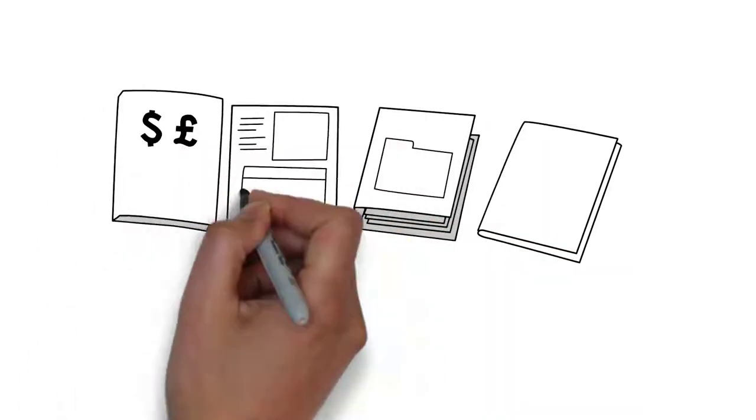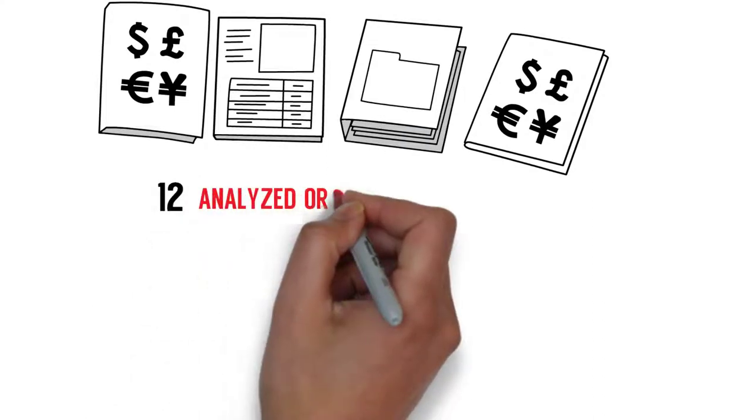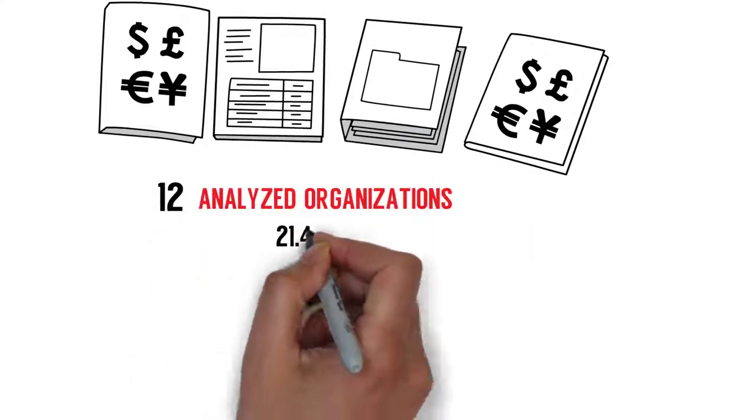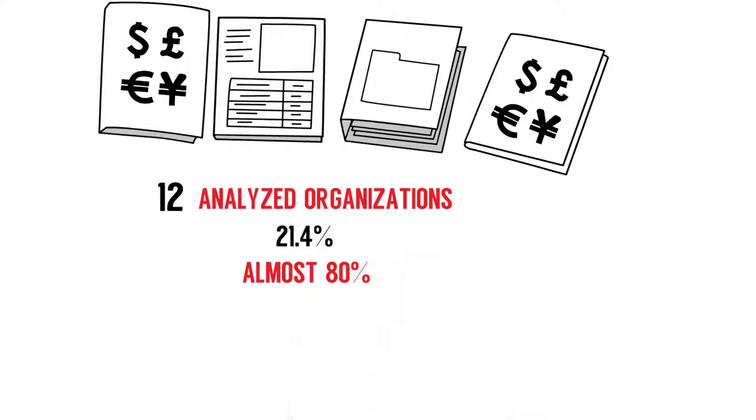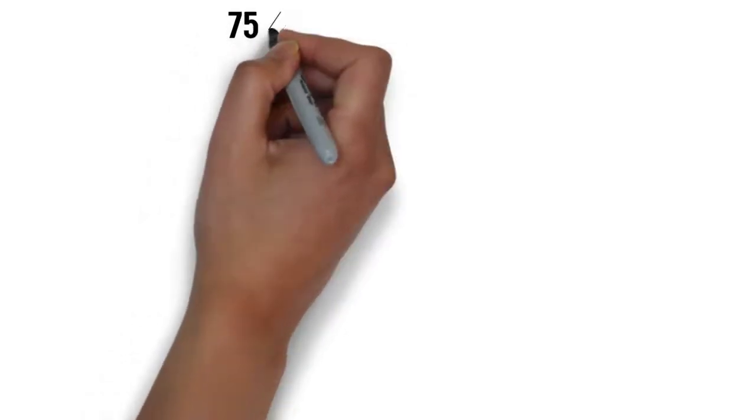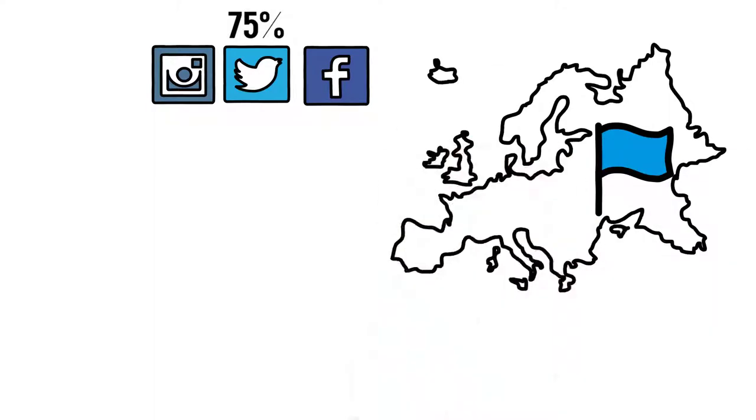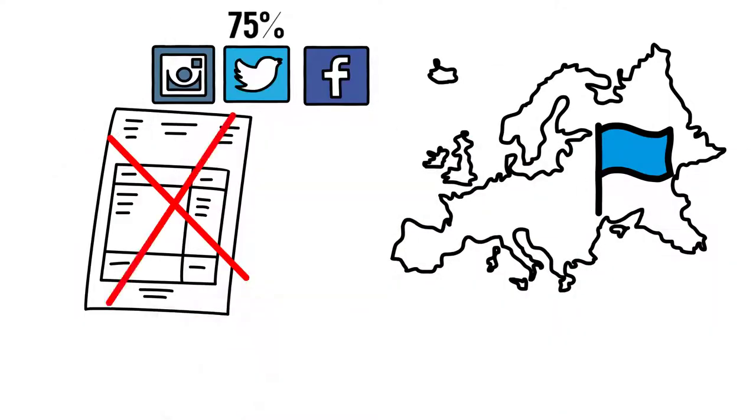Publication of financial reports has been found in the public portals of 12 of the analyzed organizations, forming 21.4%. Almost 80% of the organizations, 78.6%, haven't published such data. 75% of analyzed public platforms of national and European sport organizations do not include their annual report.